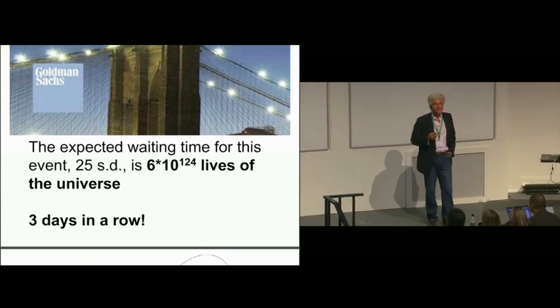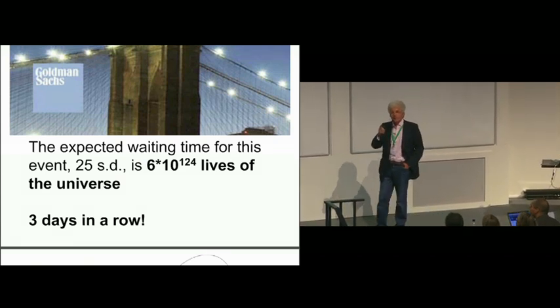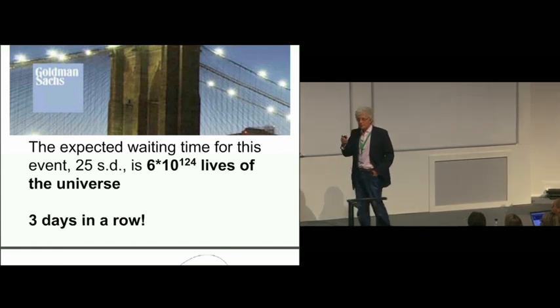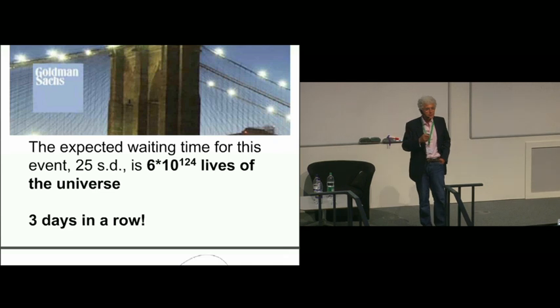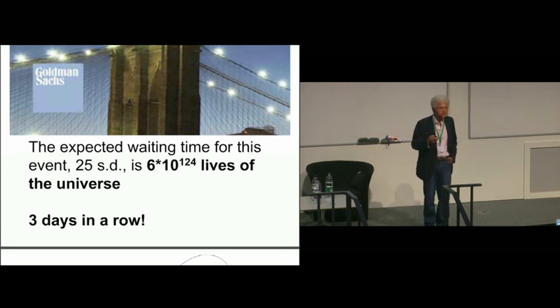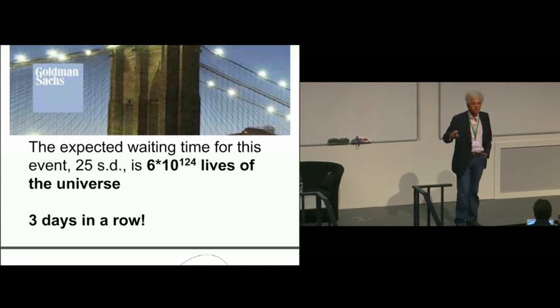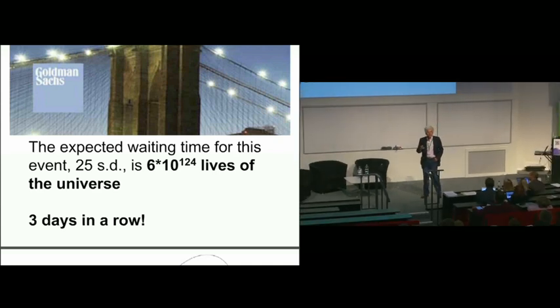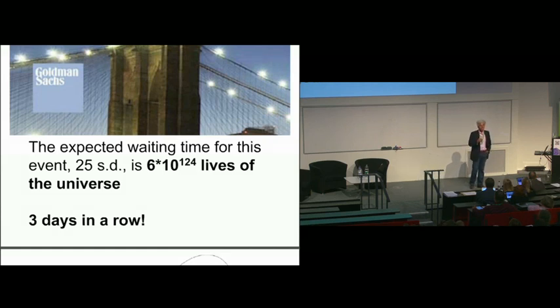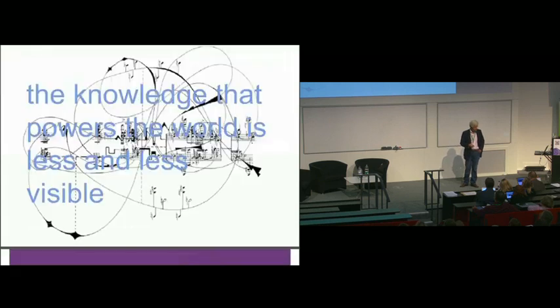Why am I telling you this story? Somebody said, 'But he must have known—the chief financial accountant at Goldman Sachs must know the normal distribution is the wrong way to look at a problem like this.' And do you know what? They're probably right, and that makes it worse. Because if that's true, he must have been confident nobody would notice. Really, my whole objective is to say: we should notice. These are the things we need to teach people. The knowledge that powers the world is less and less visible.